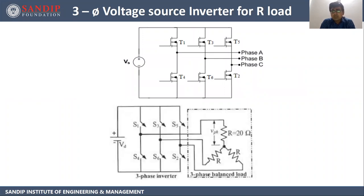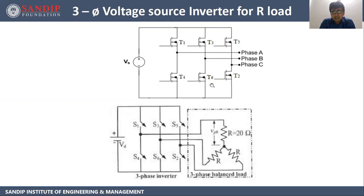Let's start with three-phase voltage source inverter for resistive load. This figure shows a three-phase voltage source inverter. It consists of six thyristors, T1 to T6. The important thing in this circuit is the positioning of the thyristors: T1, T2, T3, T4, T5, and T6. It is a voltage source inverter so the input will be voltage source Vs, and it's three-phase — phase A, phase B, and phase C.